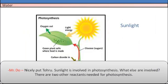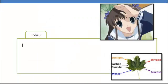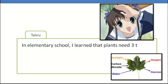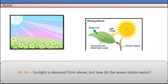Nicely put. Sunlight is involved in photosynthesis. What else is involved? There are two other reactants needed for photosynthesis. Sunlight is obtained from above, but how do leaves obtain water?